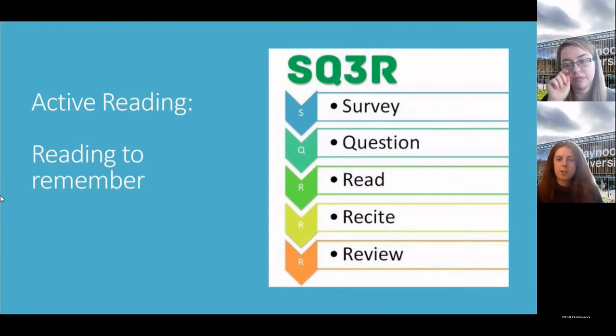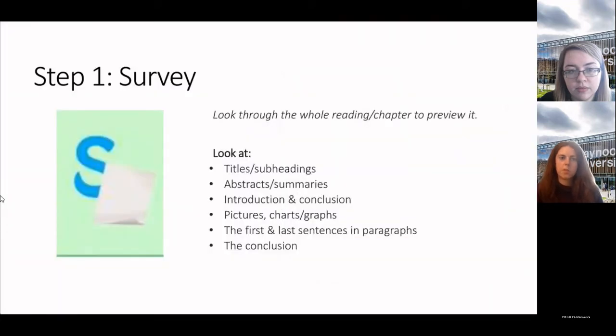Active reading is reading to remember. Here's a technique, SQ3R. That involves survey, question, read, recite and review. We're going to go into these now in more detail. The first step is the survey. This is looking through the whole reading or chapter to preview it. You're looking at titles, subheadings, abstract summaries, introduction and conclusion, pictures, charts and graphs, the first and last sentences in the paragraphs and the conclusion.